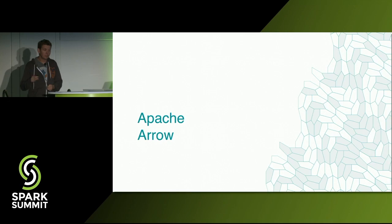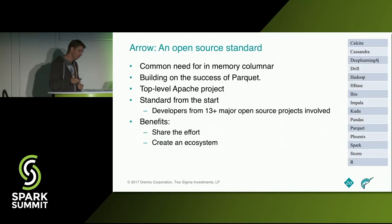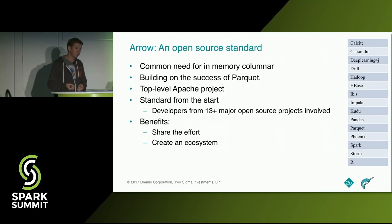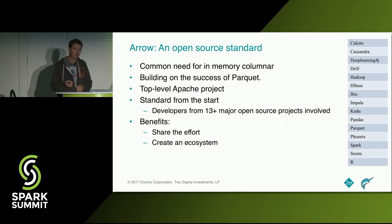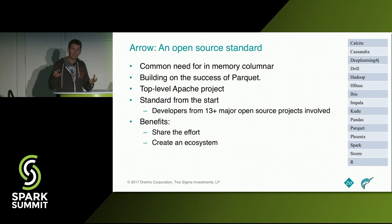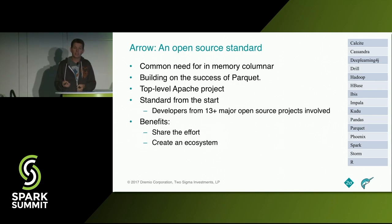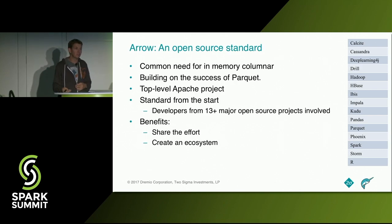That's where Arrow comes in. Arrow started as a common need for an in-memory columnar representation. A lot of open source SQL-on-Hadoop projects like Impala, Drill, Presto, or Kudu were all looking at academia — like MonetDB and vectorized execution — as the next step. The idea was: if we can agree on what this columnar in-memory representation looks like, then there are a lot of benefits in removing all the overhead of converting from one representation to the other, from one system to the other. Building on the success of Parquet, we put all those people together and started an Apache project to define the format and share the implementation.